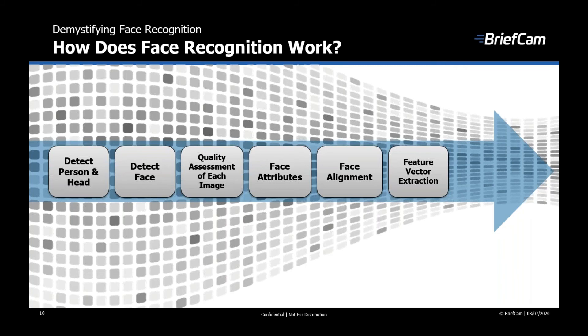This feature vector is extracted for both faces included on the watch list and for faces BriefCam detects within the footage. The last phase is feature vector matching, where two vectors are compared with a special function that analyzes the distance between them and ranks the probability that those two feature vectors belong to the same person. A matching probability score above a certain threshold will be considered a positive match.